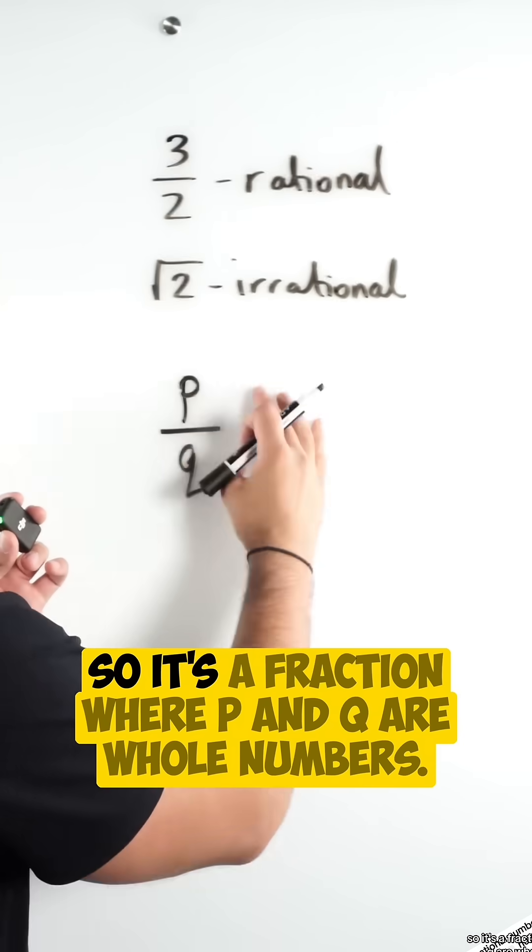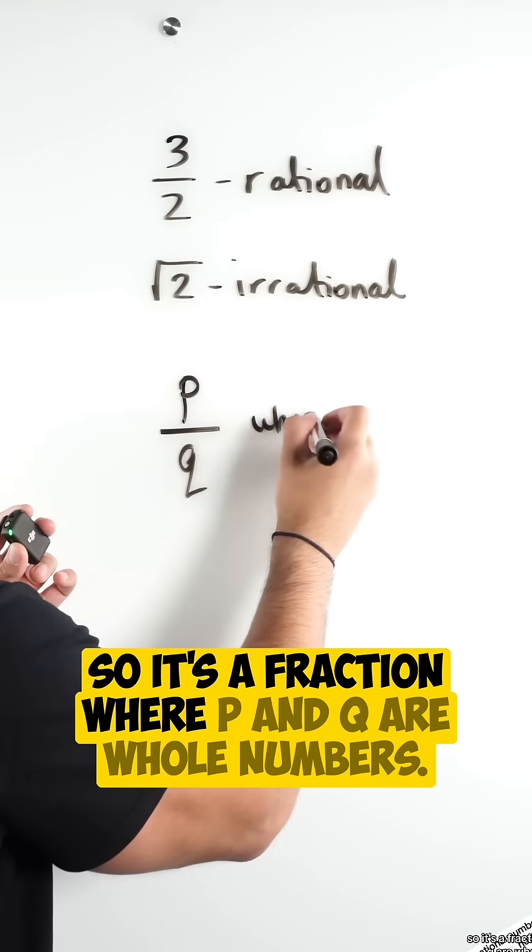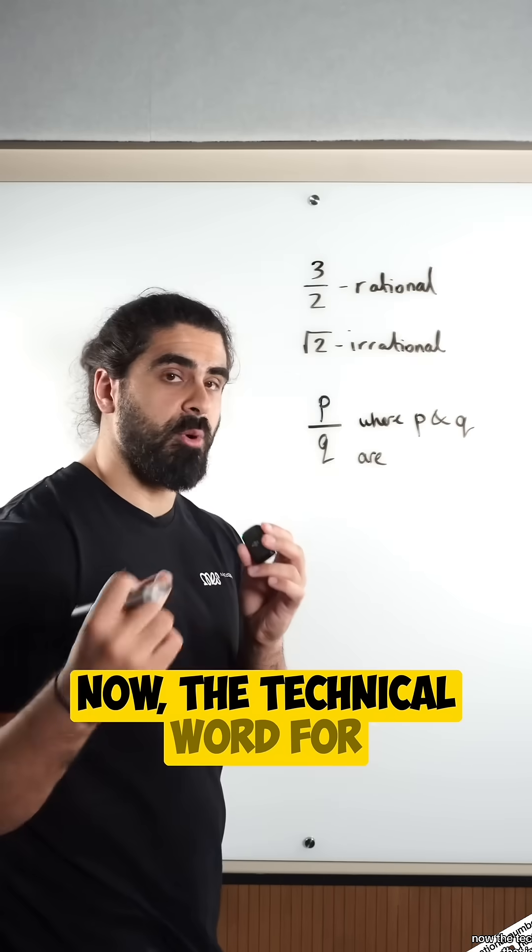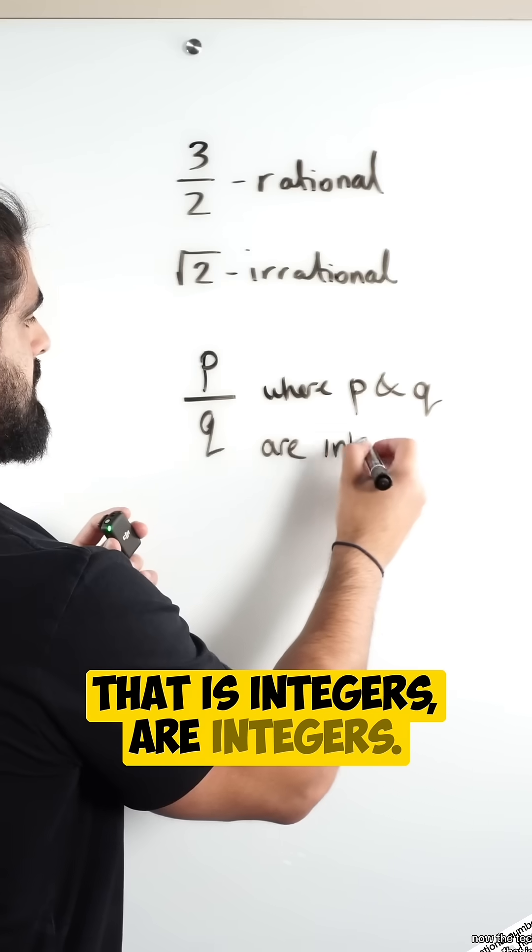And that's one of the conditions, so it's a fraction where p and q are whole numbers. Now, the technical word for that is integers. Integers.